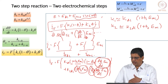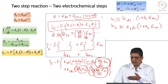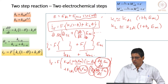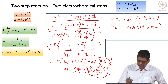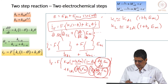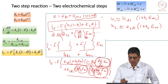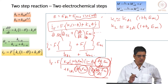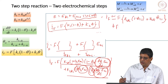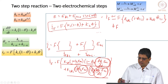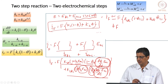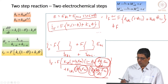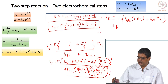Expanding the expressions, I get 4 terms from the first part and 4 terms from the second part. The E_AC-squared terms are neglected, leaving effectively 3 terms from each. The first term from each is constant; the middle two terms from each are first-order in E_AC. Grouping: the constant terms will give I_DC = F·[k1_DC·(1−theta_SS) + k2_DC·theta_SS], and the first-order terms will give I_AC.